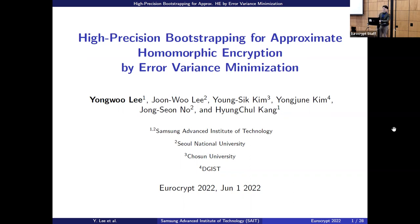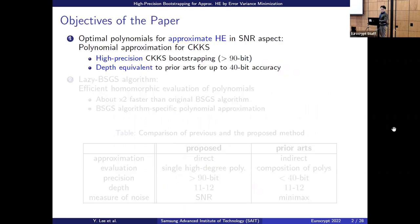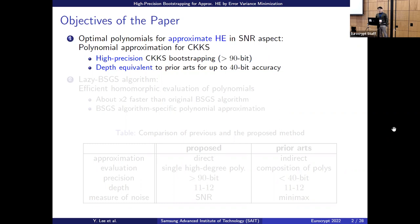We have achieved high precision bootstrapping, which is interesting in approximate homomorphic encryption. We used error variance minimization technique for that. In this paper we proposed how to find the optimal polynomials for approximate homomorphic encryption CKKS in the aspect of SNR. This paper is basically about how to find a good approximate polynomial for CKKS, and using this approximate polynomial we have achieved high precision CKKS — for example, more than 90 bits.